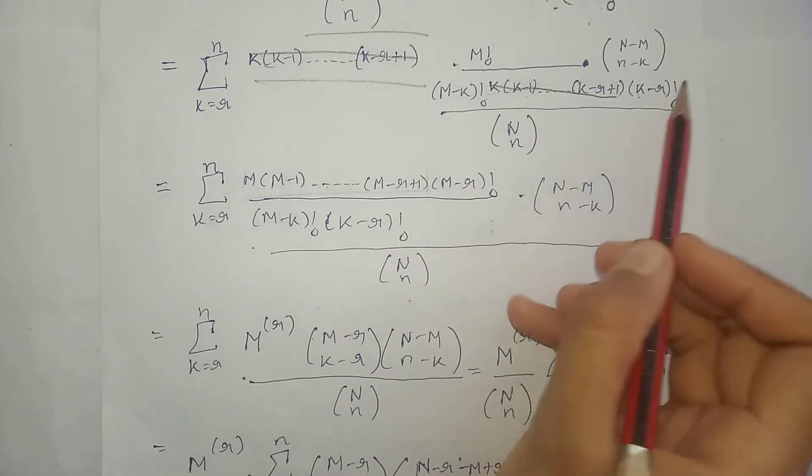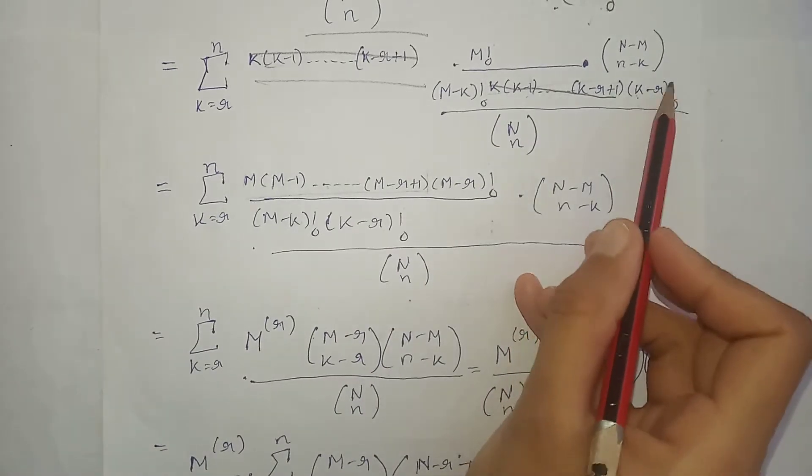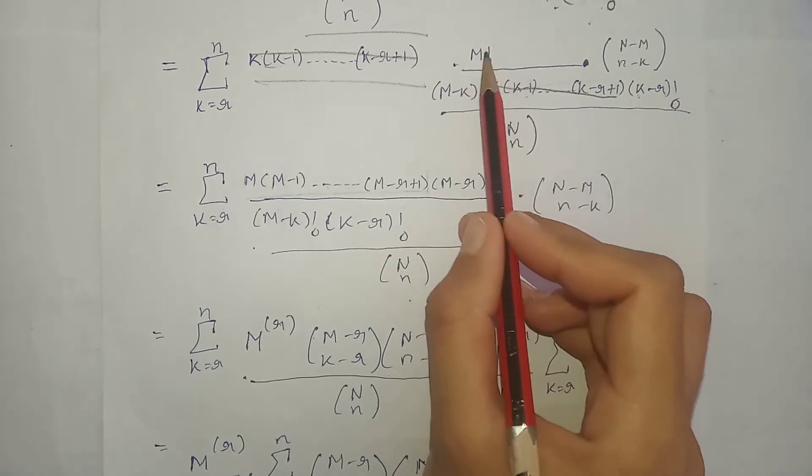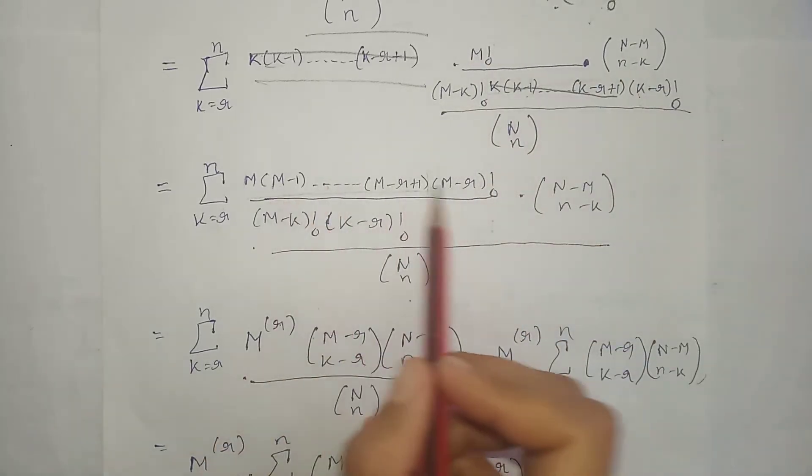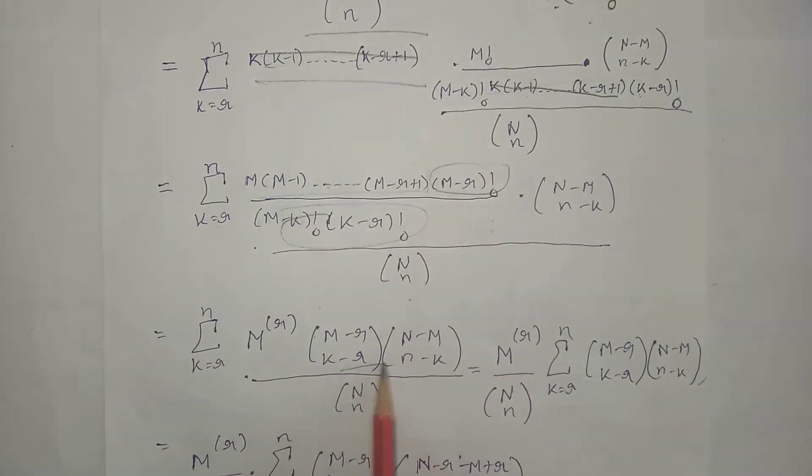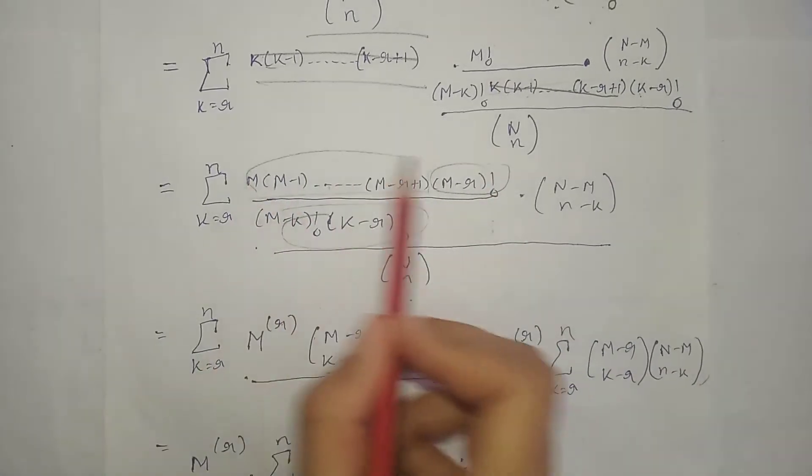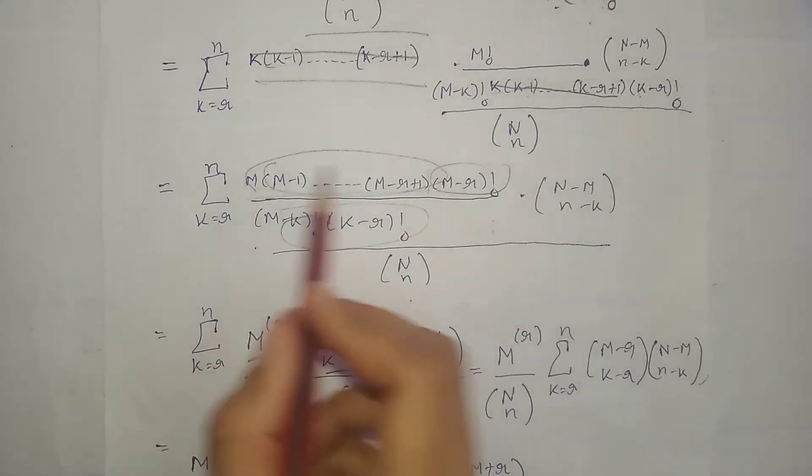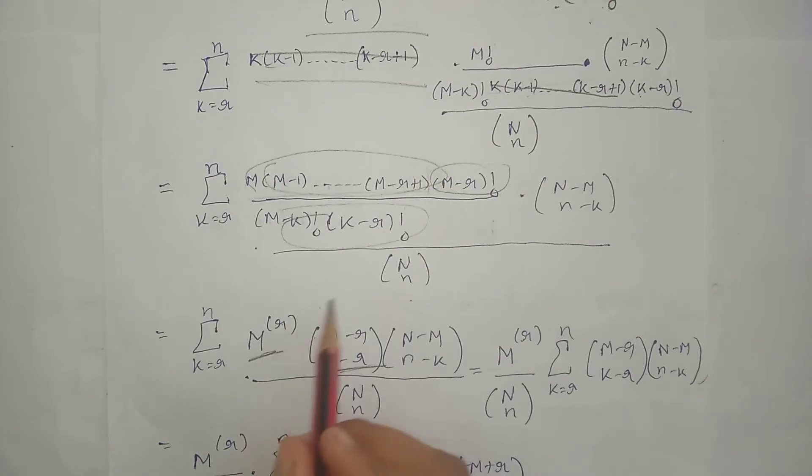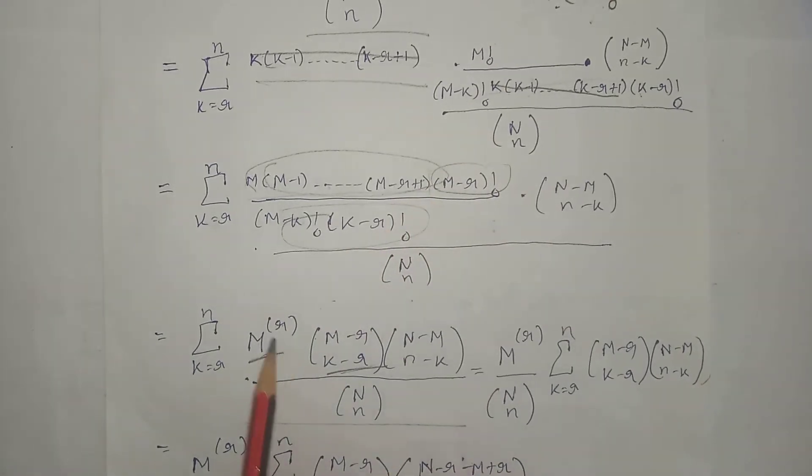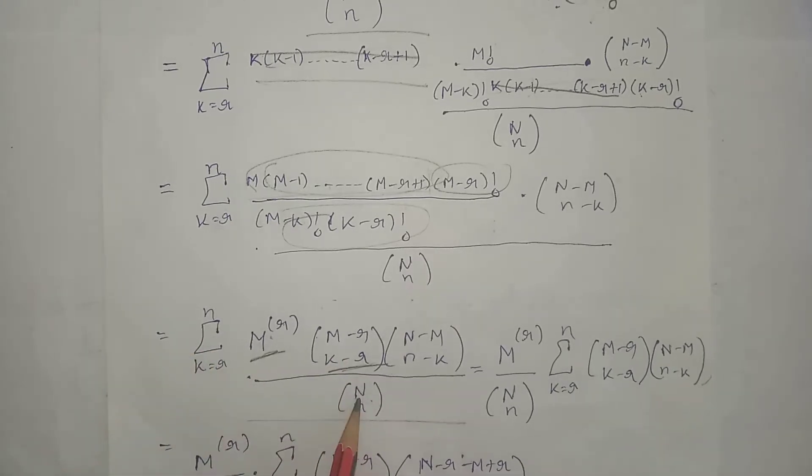Now we know that if we want to write these three terms again in combination form, if we have k minus r factorial present here, then we need M minus r factorial on top as well. That's why we expanded M up to M minus r factorial. So these three terms together form this combination. Now this term we can also write like this, because actually M factorial if we expand up to M minus r plus one term. So up to here we are done.